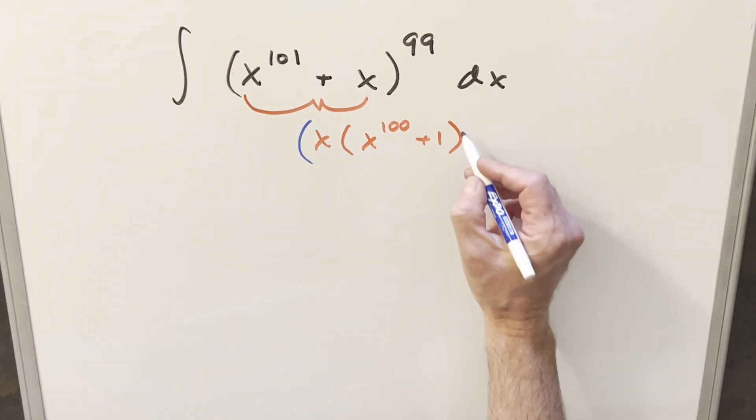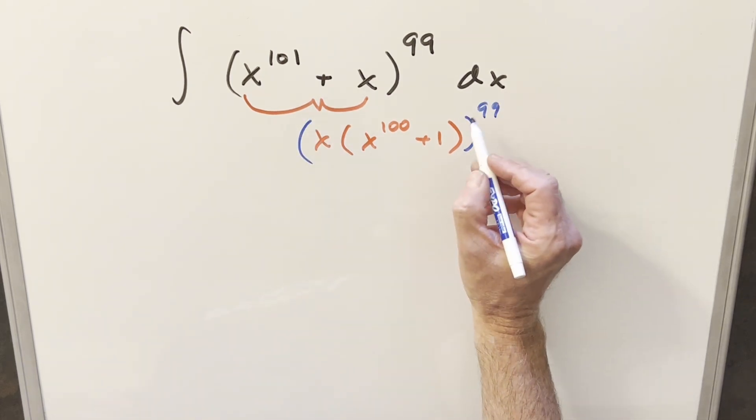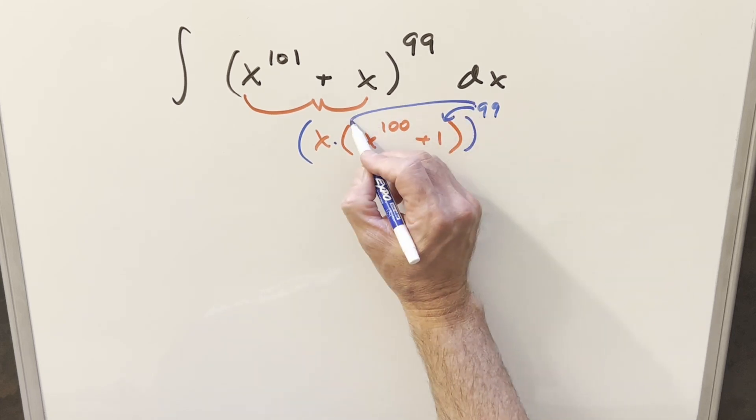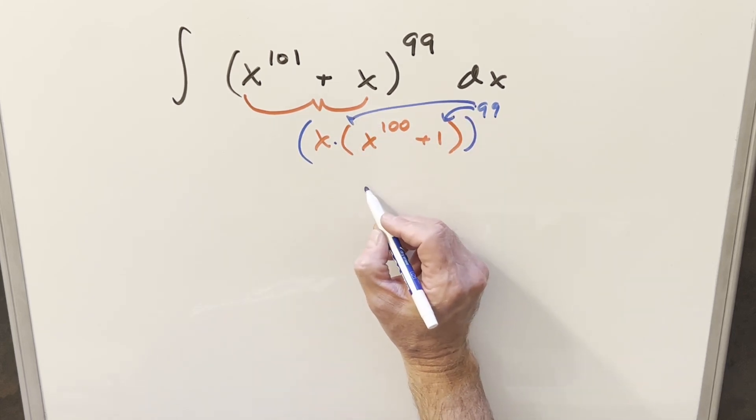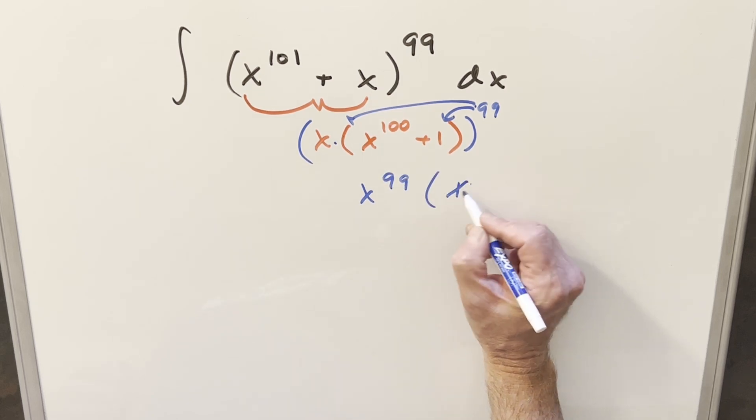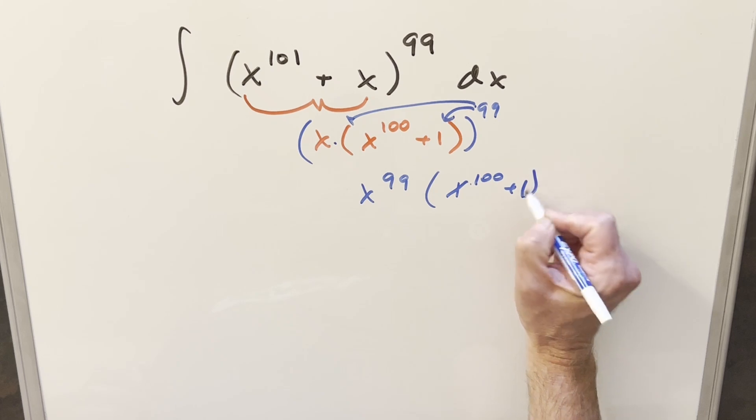Now we have the whole thing to the 99th power so what I can do is split it up because we're multiplying here so I can distribute the exponent. When I rewrite this it's going to become x to the 99 times x to the 100 plus 1 to the 99.